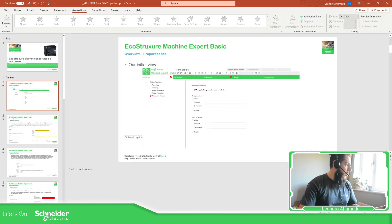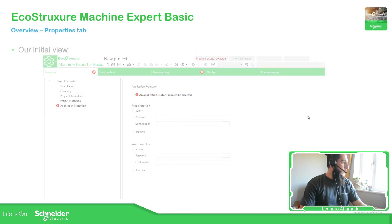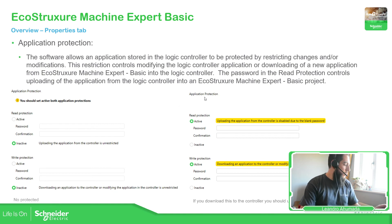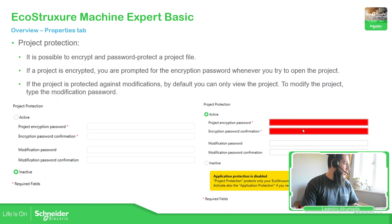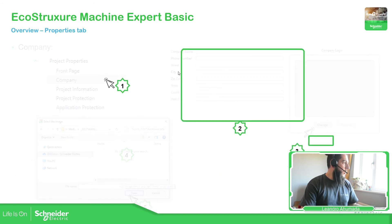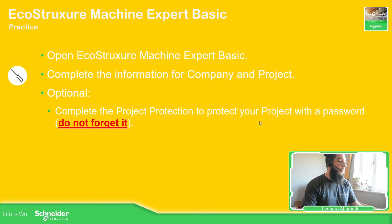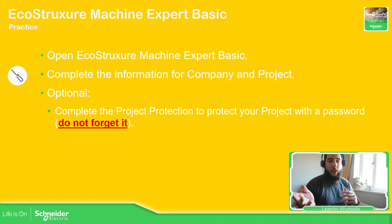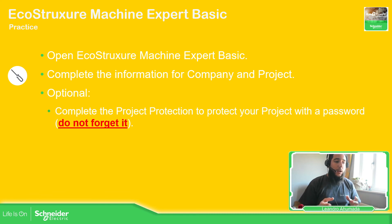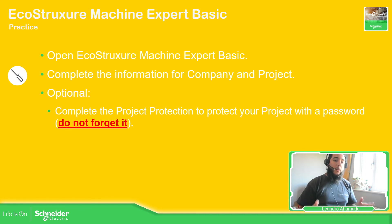So this is it for this part. This section is very easy — just complete the fields about the project and the company. As practice, open the software, start with the Properties tab, complete the company and project information, and optionally play with the passwords to see the behavior and the messages. Later we'll see in a real project how to proceed with all the functionalities this software has to offer. Thank you very much for watching this video, and see you in the next one.